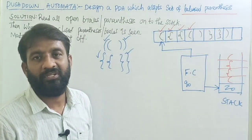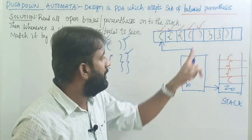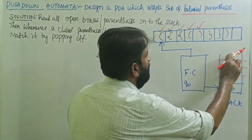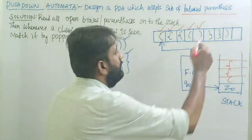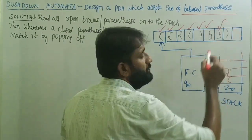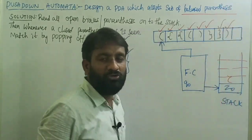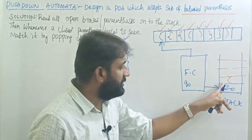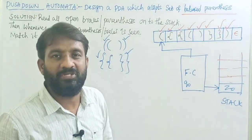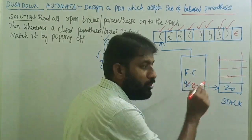Remaining on state q0, the next input symbol is close brace — read it and do the pop operation, removing the top element from the stack, which is open brace. Then read close parenthesis — remove open parenthesis from the top. Then read close parenthesis again — remove open parenthesis. Then read close brace — remove open brace. No more input symbols; epsilon is the last input. So in state q0 with epsilon and top of stack z0, move to the final state — halt the machine.